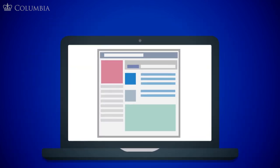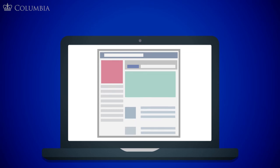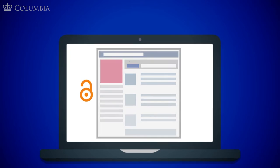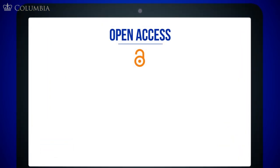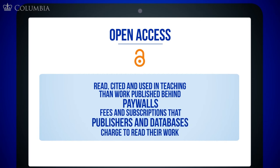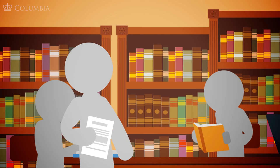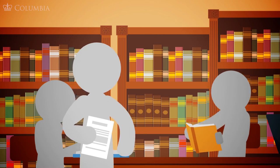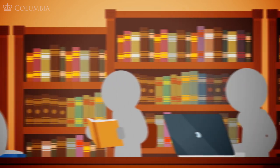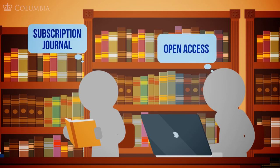Thanks to the World Wide Web, we're able to access many published materials online for free. The word we use for this in academic publishing is called open access. Open access work is much more likely to be read, cited, and used in teaching rather than work that's published behind paywalls — the fees and subscriptions that publishers and databases charge to read their work. Open access work encourages knowledge equity by providing access to information regardless of whether an individual or institution has the ability to purchase it.